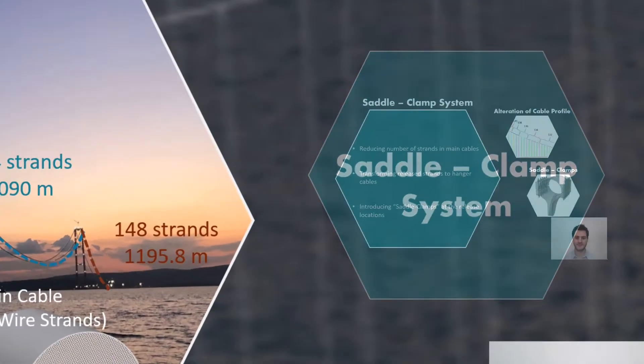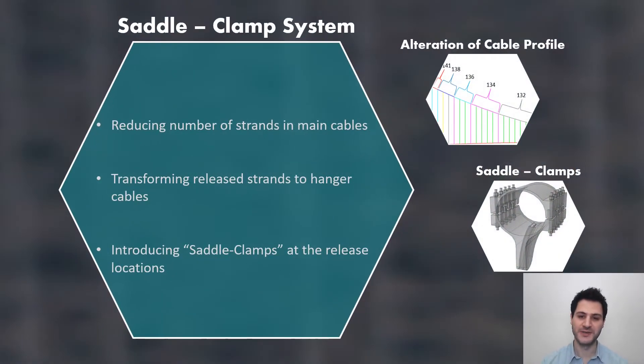However, saddle clamp system aims changing cable cross-sectional area with reducing number of strands in it. Release strands cannot just be cut out since the continuity is the only way to present axial force on these tension elements. For that reason, wherever strands are reduced, release strands are transformed to the hanger cable. To achieve this transformation, special clamps are designed for saddle clamp system.